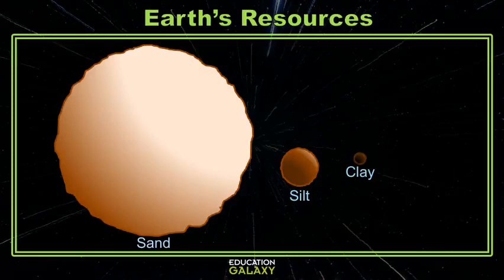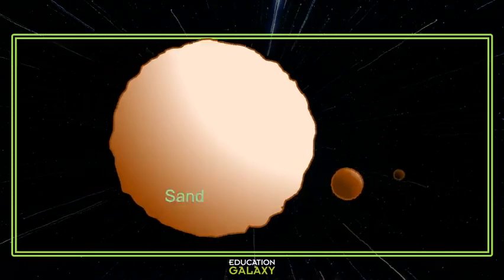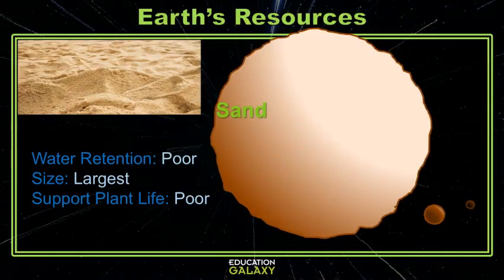Sand, silt, and clay are all bits of dirt and rock. Sand is made up of larger bits of weathered rock — it's the largest particle. Sand holds very little water, and this keeps the sand particles from clumping together. It allows plants to grow quickly due to ease of root growth, but since it doesn't retain water well, the plants end up not thriving and they die.